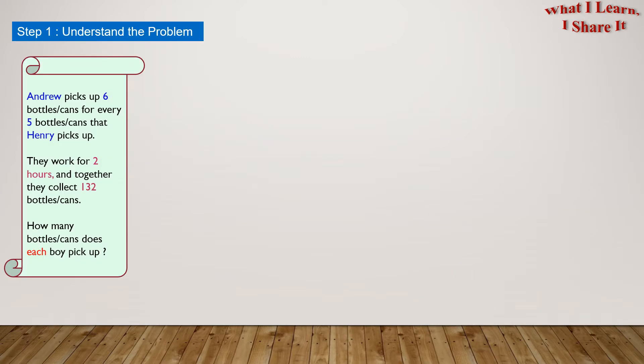Step 1. Understand the problem. So, what are we given? We are given that Andrew picks up 6 bottles or cans for every 5 bottles or cans that Henry picks up. In our own words, we can write: whenever Henry picks up 5 items, Andrew picks up 6 items.